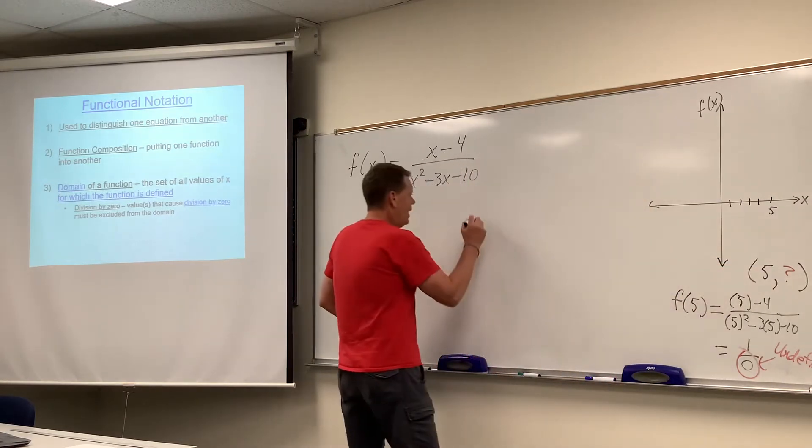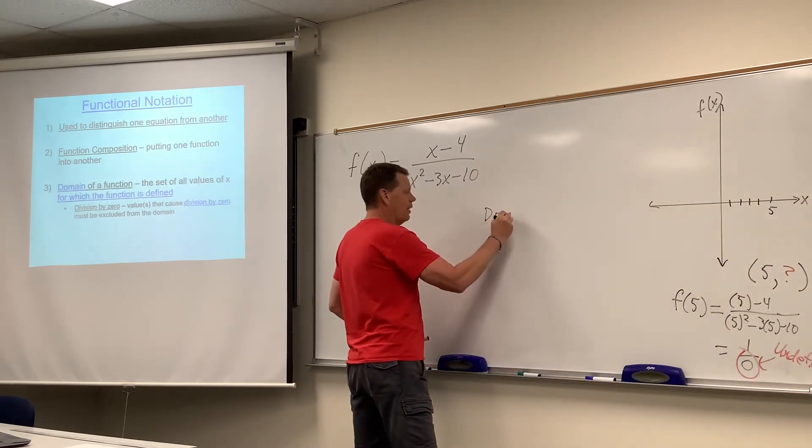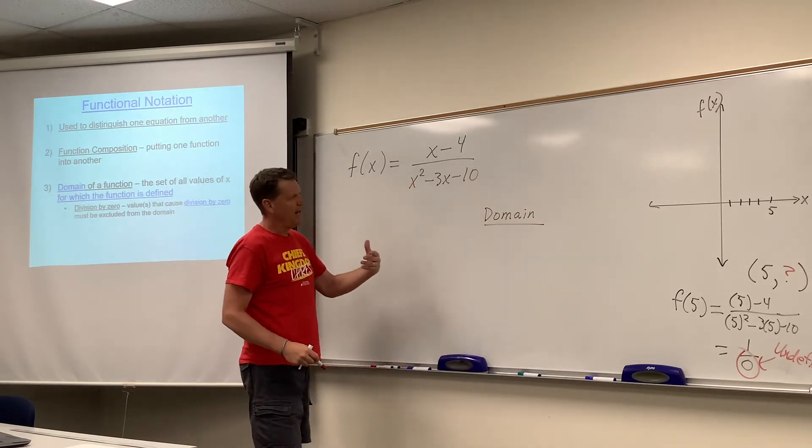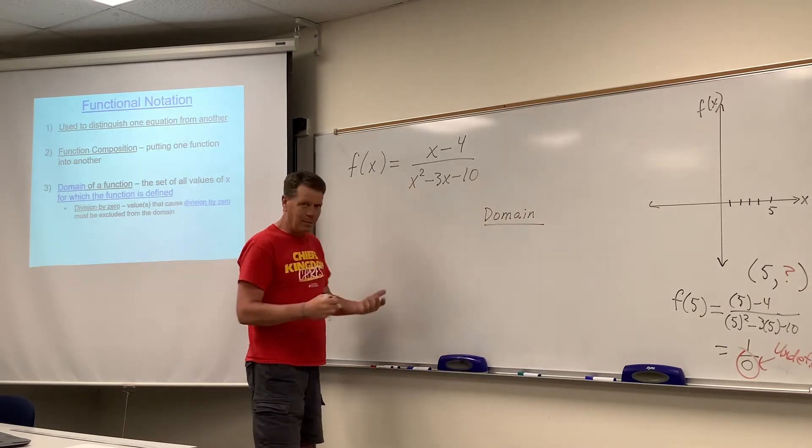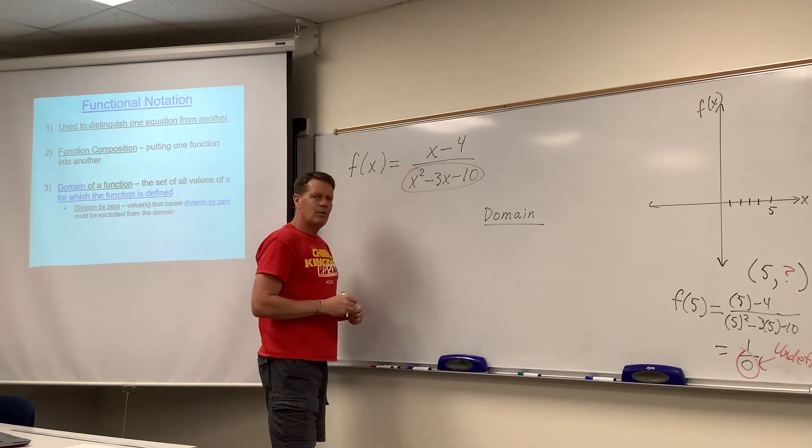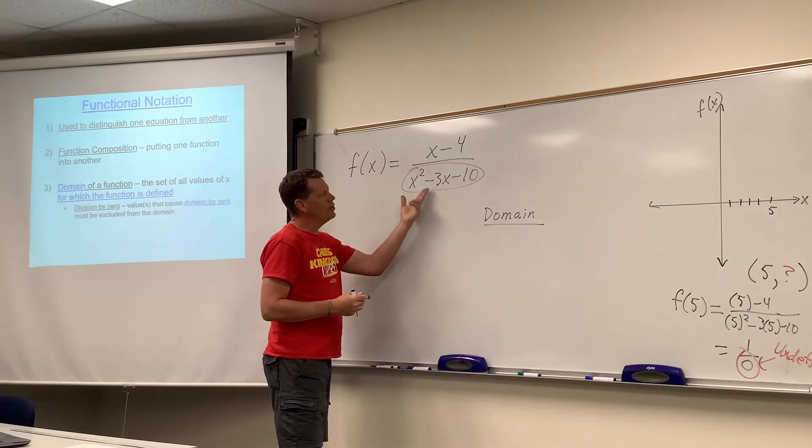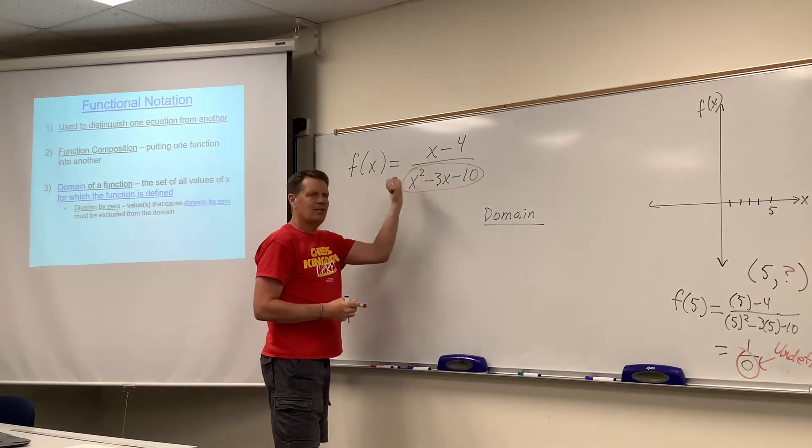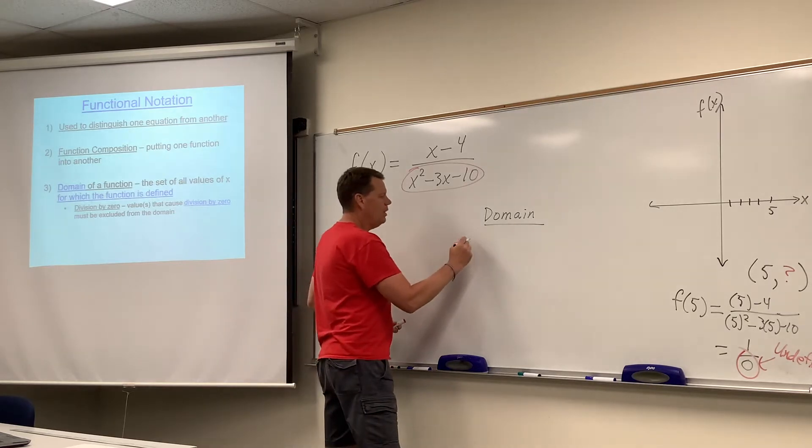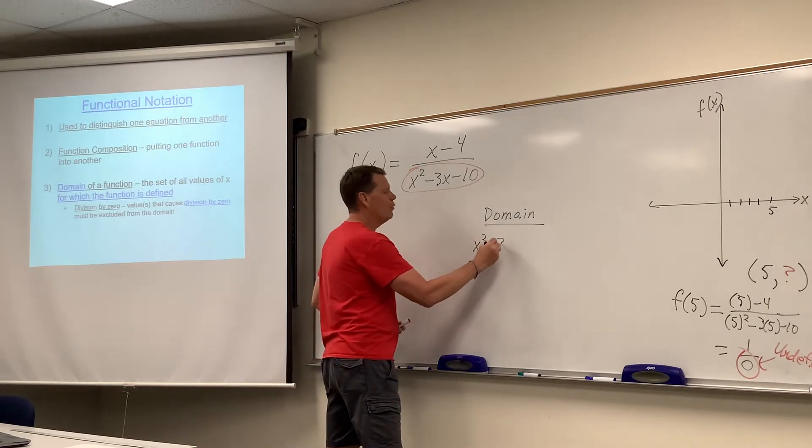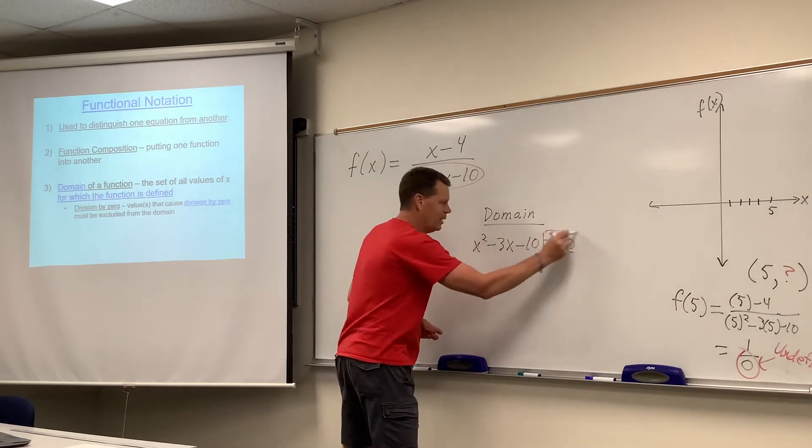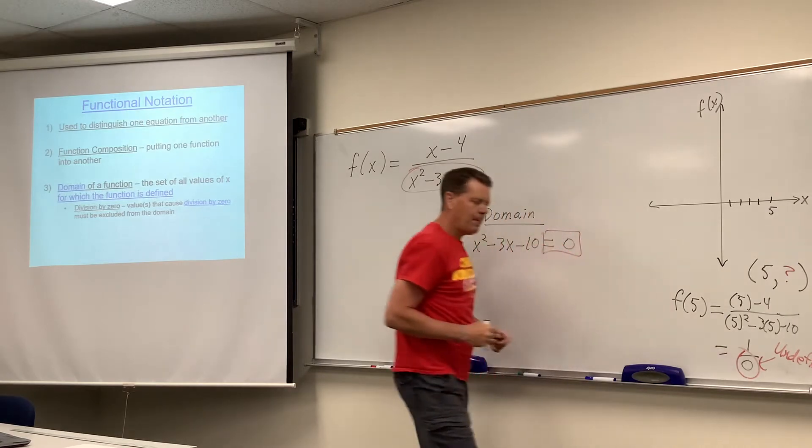What you would do here would be to look at this and say, well, if I want to find the domain and that particular function has division in it, and we've talked about this, we don't want that denominator to equal zero. So why don't we go find the numbers that make that equal zero and toss them out? Exclude them from the domain. So the very proactive way of finding the domain would be to say, let's find those numbers that cause that problem of zero on the bottom.